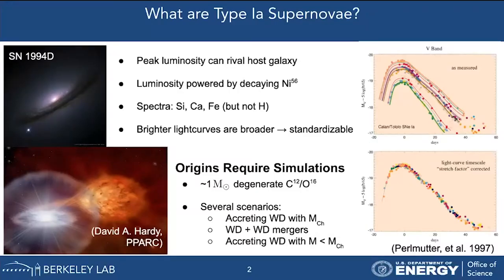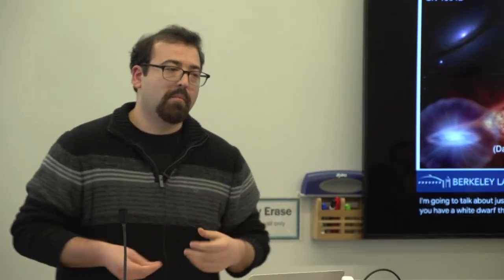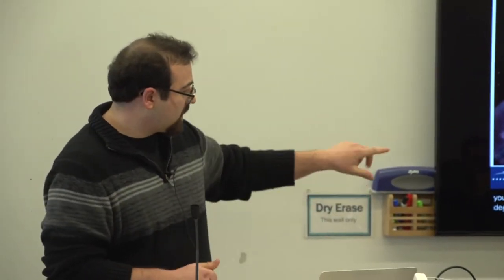From observations, these events arise from the radioactive decay of nickel-56, produced by burning one solar mass of carbon-12 and oxygen-16 under special conditions. People have proposed several different progenitor scenarios. I'm going to talk about just one: a picture where a white dwarf accretes matter from a companion star, raises its mass to the unstable maximum mass for matter supported by electron degeneracy pressure, becomes unstable, and undergoes thermonuclear runaway.